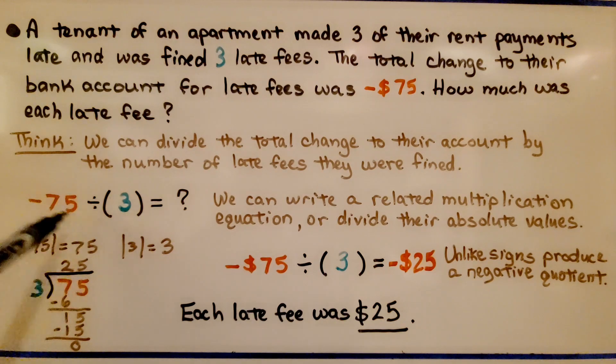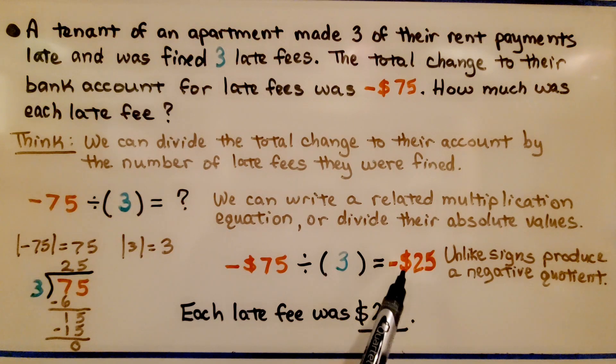We have unlike signs. Unlike signs produce a negative quotient. We have negative $25 was charged to the account. That means each late fee was $25.